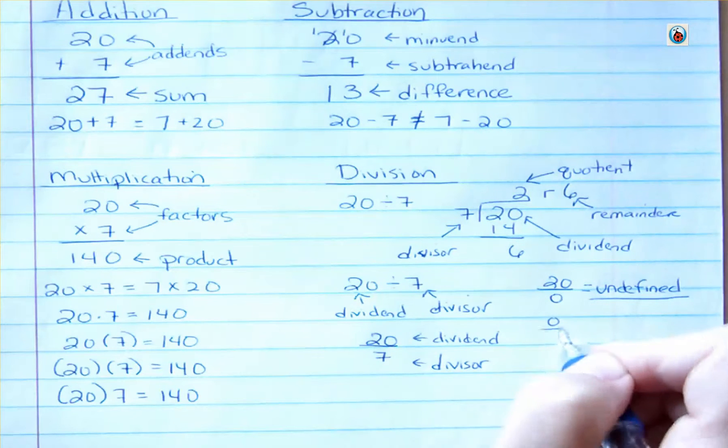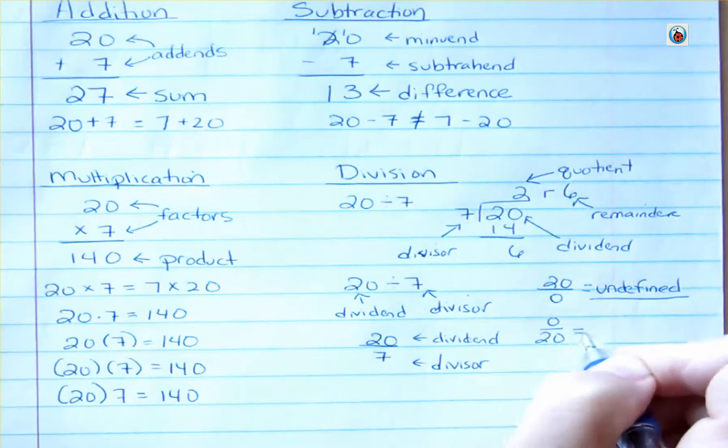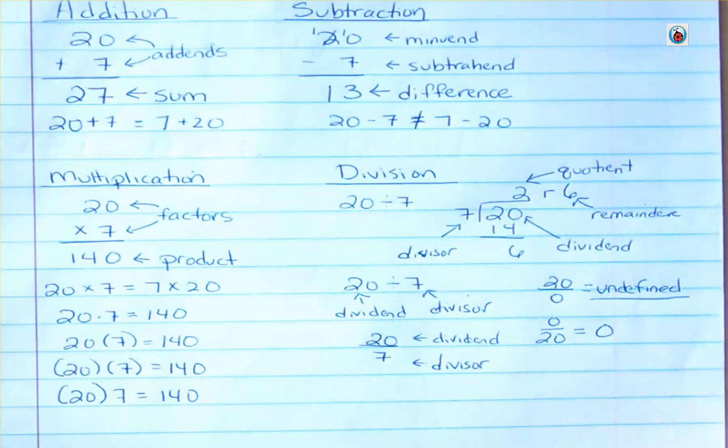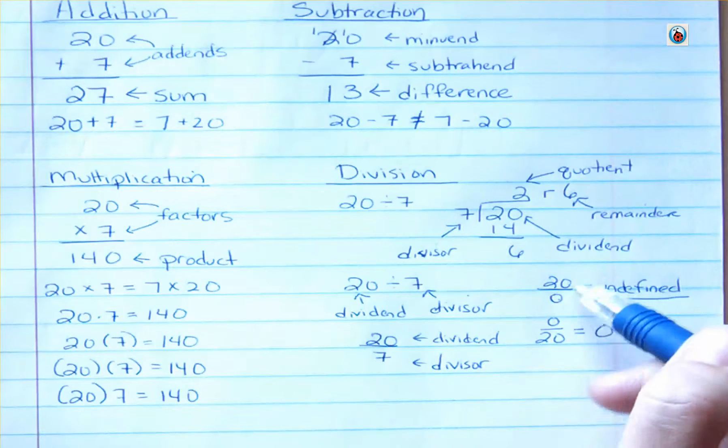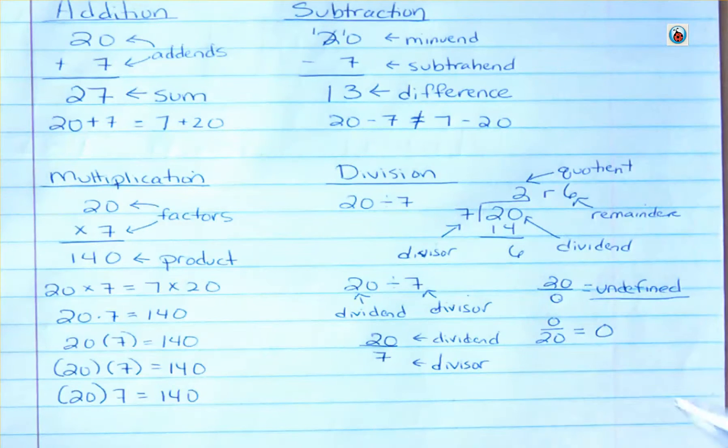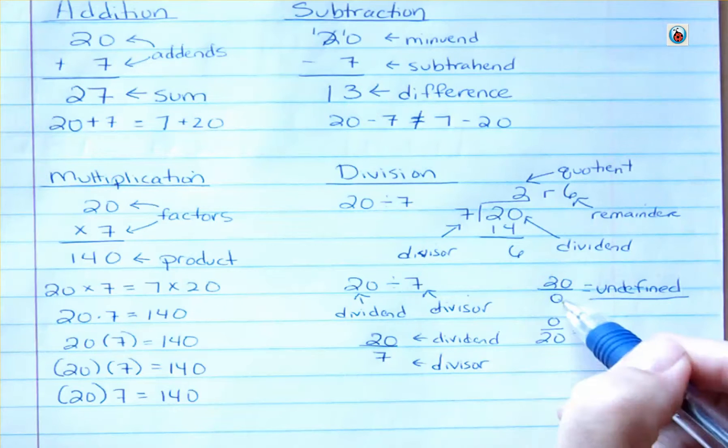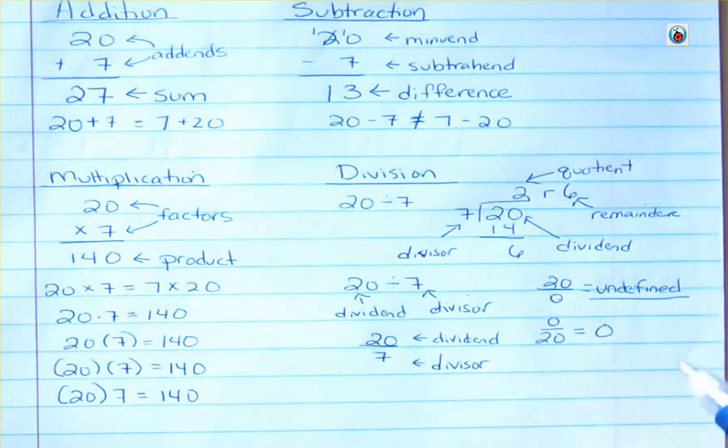On the other hand, if 0 is on the top, that's fine. That says 0 because this says 20 goes into 0 zero times. This says 0 goes into 20. Well, how many times would nothing go into something? It can't be done. It's undefined. So we can't have 0 as a divisor, but we can have 0 as a dividend. No matter what you have on top, if 0 is the divisor, it's always undefined.